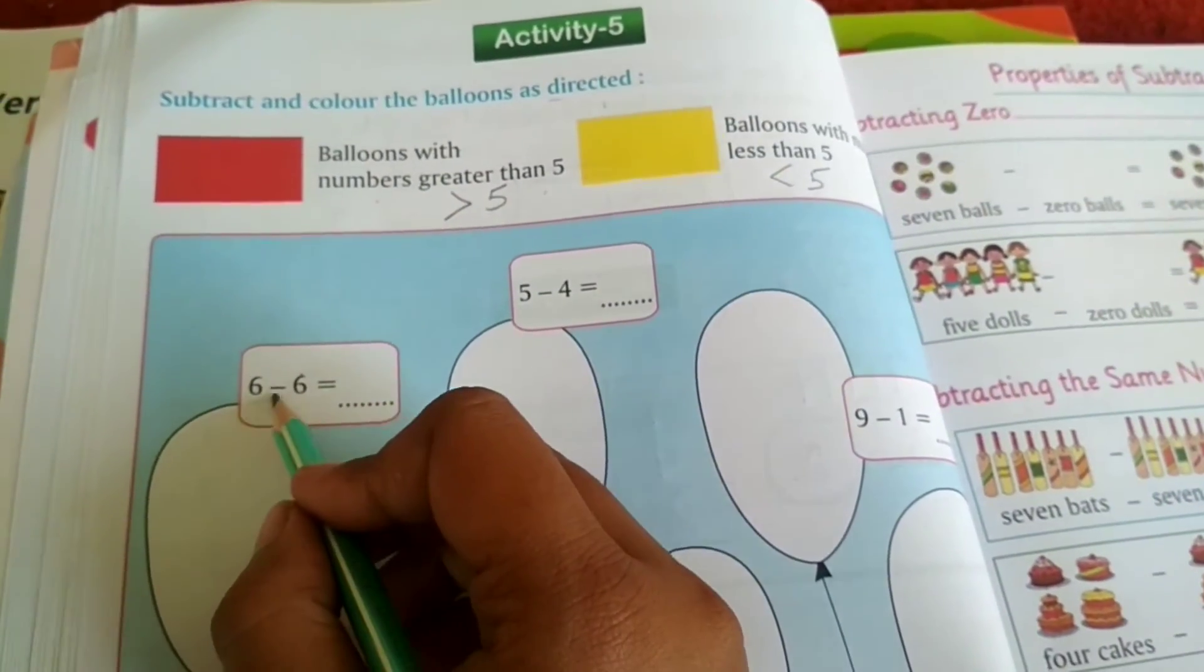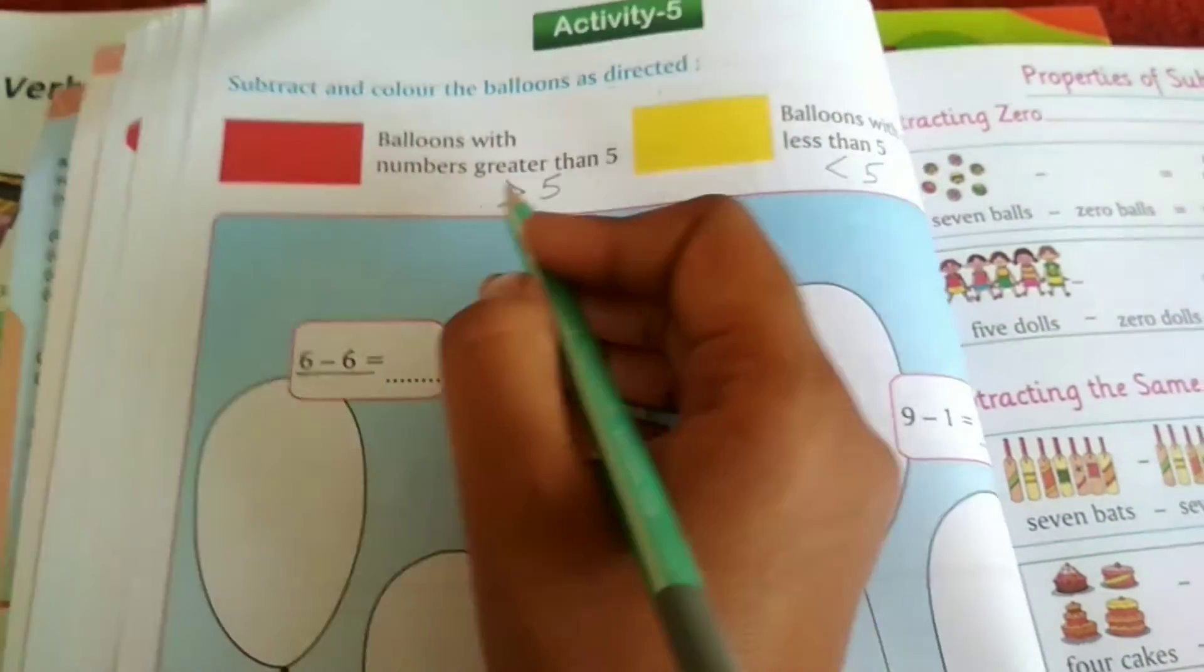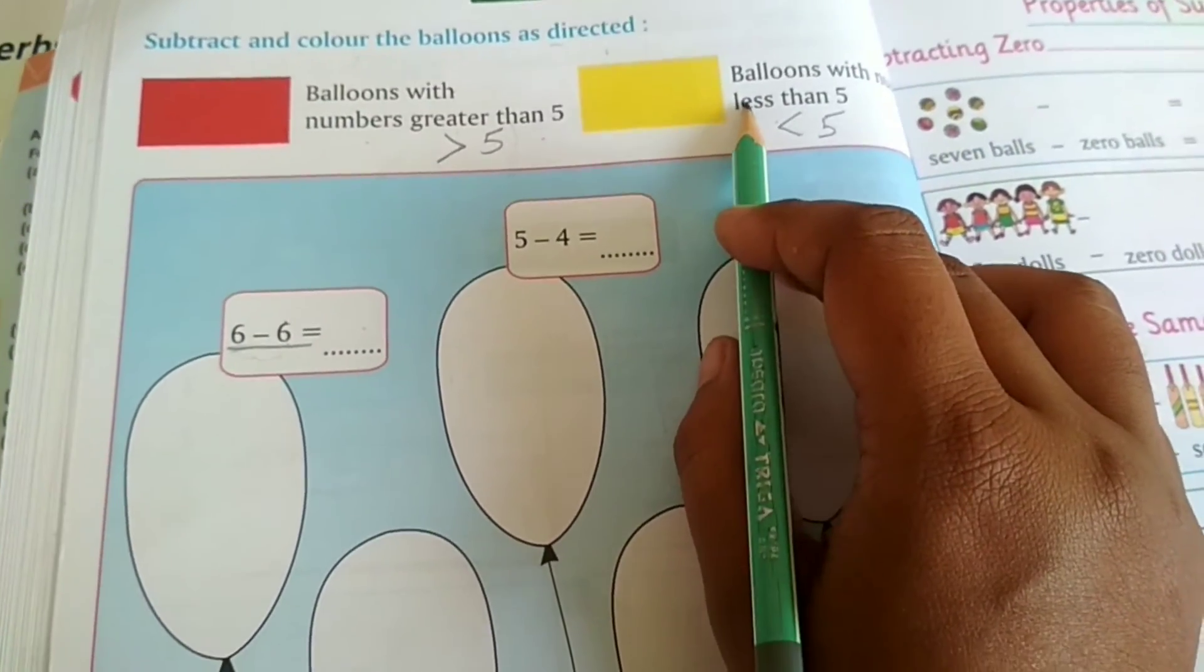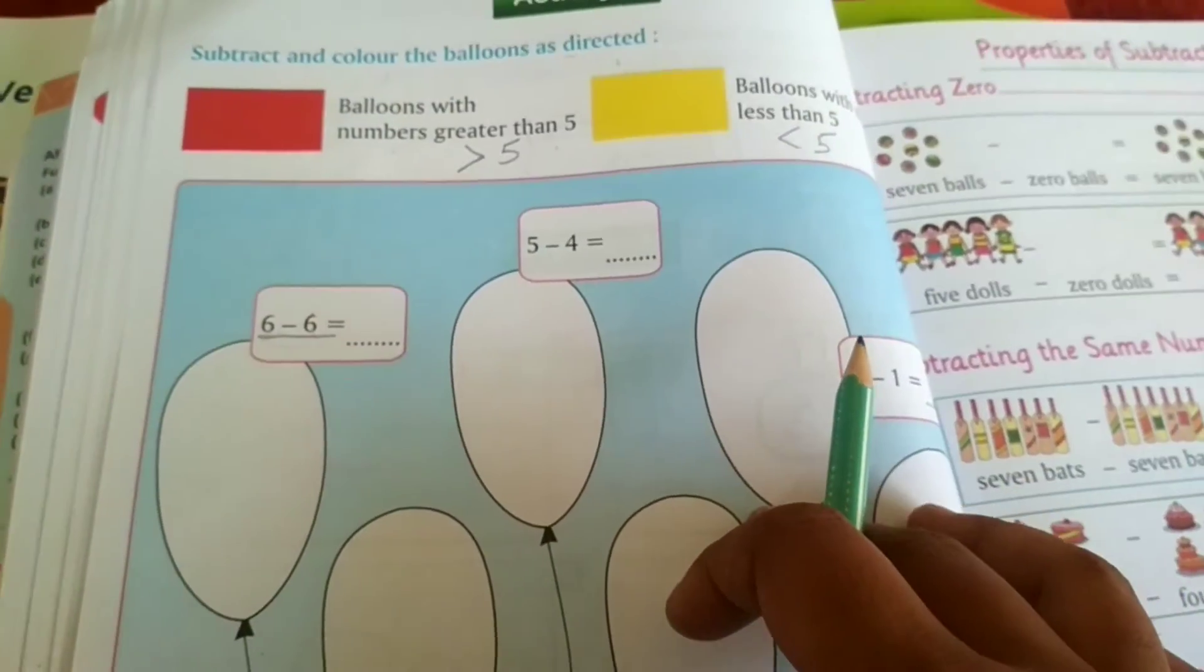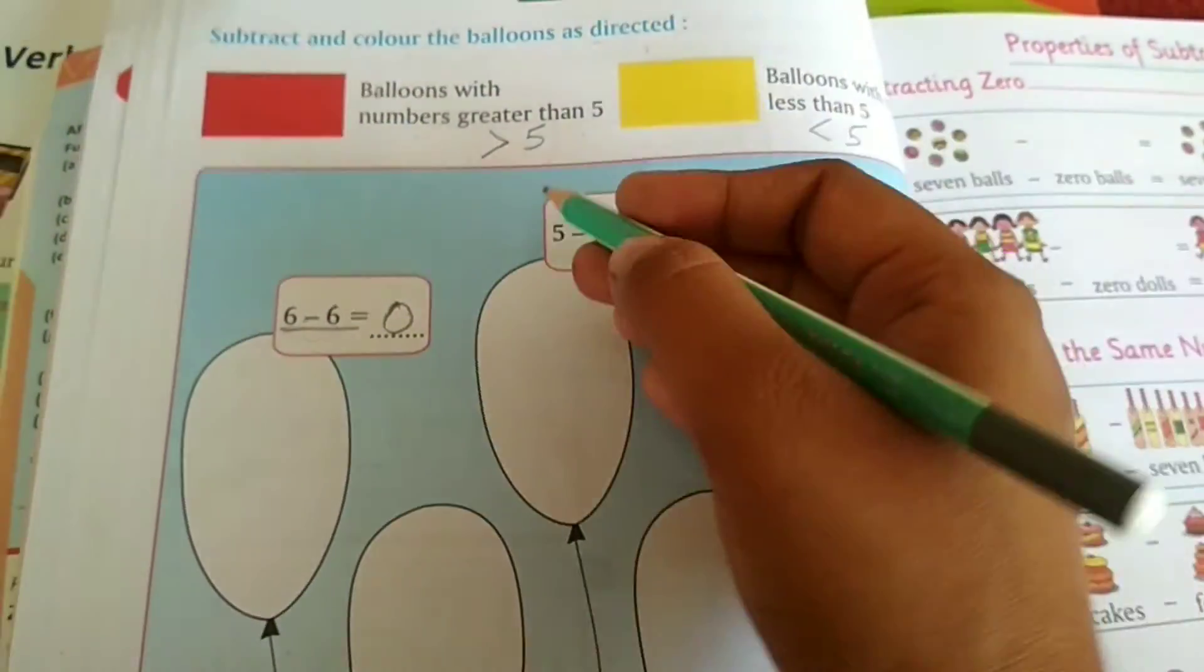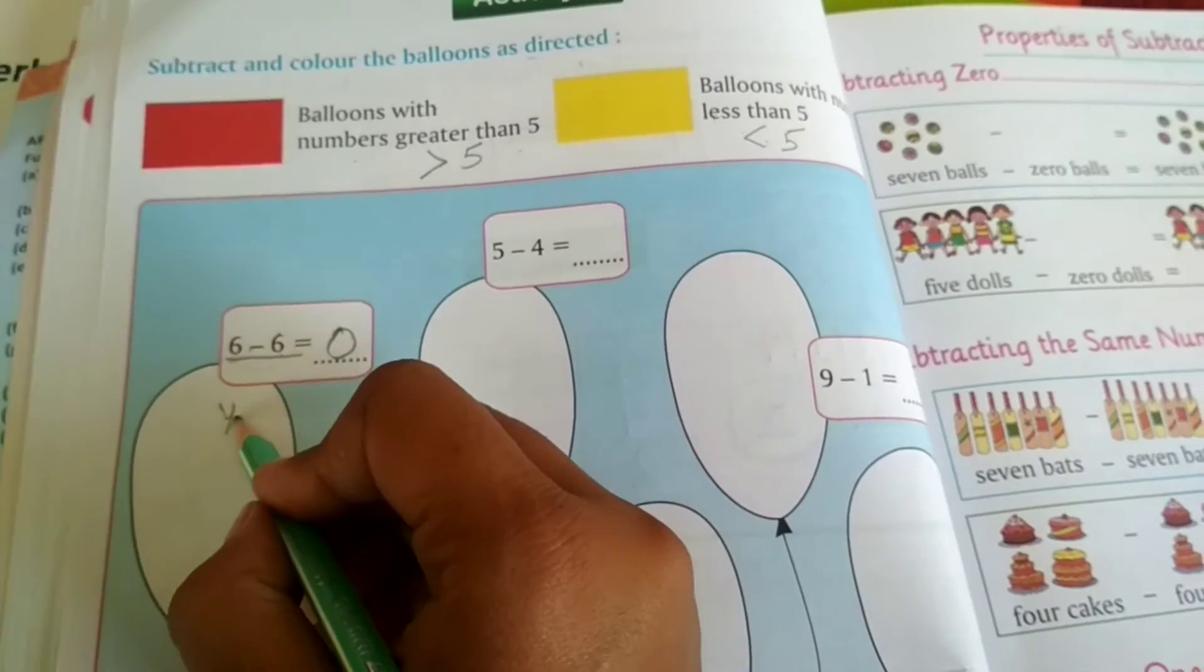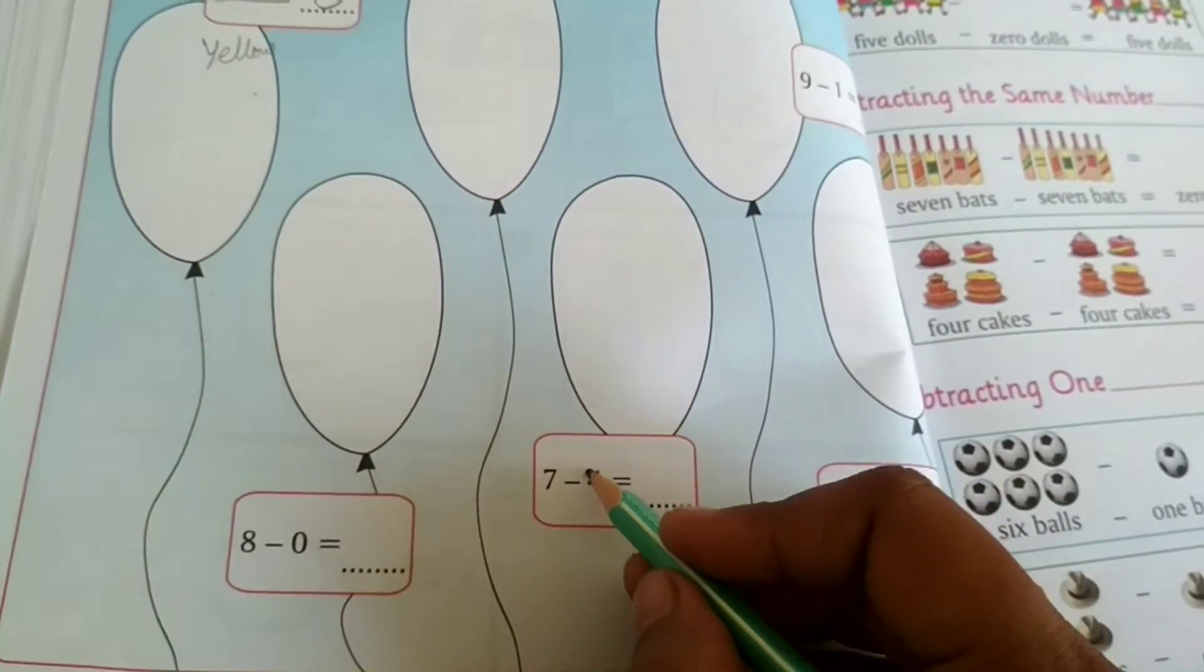Means, achor aap ye kaunsi line hai pehle bolo? Horizontal. In horizontal agar greater than 5 aayega toh aapko red color karna hai, aur agar 5 se kam hoga toh aapko yellow color karna hai. Let us solve 2, rest you will do and rest the color you will also do. 6 minus 6 is 0. 0 is more than 5 or less than 5?